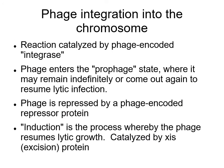Integration is encoded by a phage protein called integrase. As a result of the integrase reaction, the phage is inserted into the chromosome where it resides in an inactive prophage state. It can remain there almost indefinitely or come out again to resume lytic infection. As a prophage, the phage does not express most of its genes, but does encode a repressor which keeps it in the lysogenic state. Induction is the reversal of that process, where the phage resumes lytic growth, catalyzed by a phage-encoded excision protein.